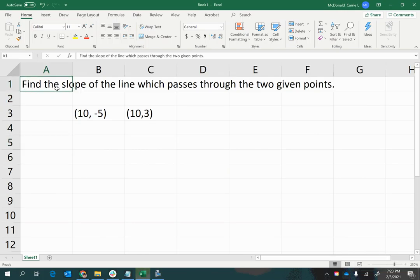Find the slope of the line which passes through the two given points. Alright, so in this problem, we have been given two sets of ordered pairs, and we're supposed to figure out what the slope of the line is.